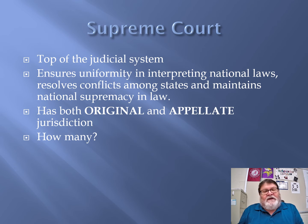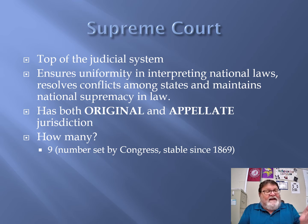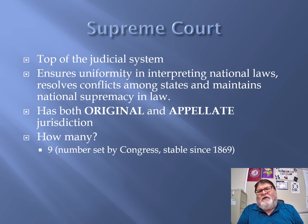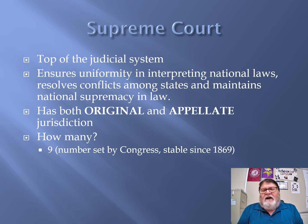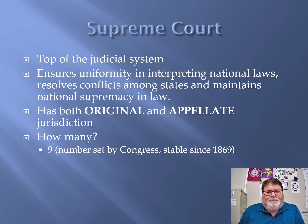How many justices are there? There are nine. That number is set by Congress — the Constitution doesn't specify how many, it just says there must be a Supreme Court. The number nine has been stable since 1869. The very first Supreme Court had six justices. They figured out fairly quickly it's better to have an odd number, and it varied somewhat until 1869 when it was set at nine and has remained there ever since.